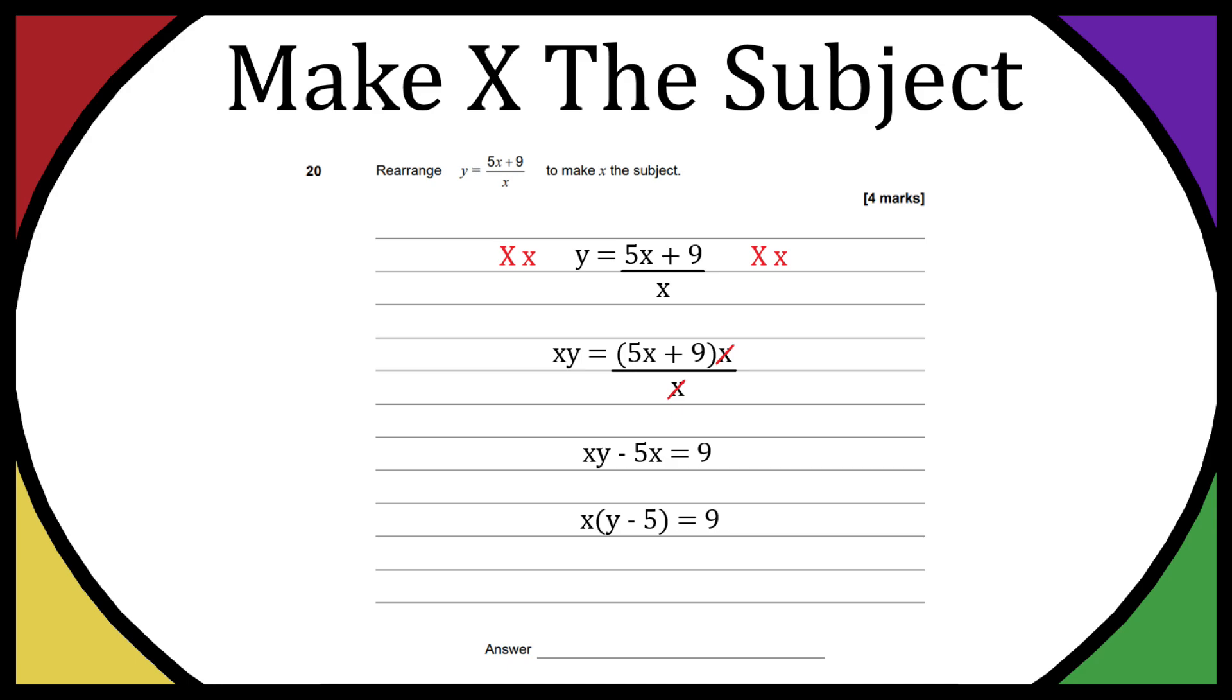From there we just want to divide both sides by y minus 5, so that's going to give us x equals 9 over y minus 5 and that's making x the subject of the formula.